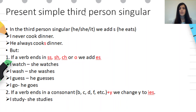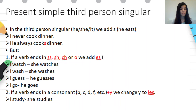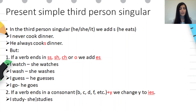Present simple — third person singular. When we use present simple, we should pay extra attention to the third person singular — he, she, it — because we add -s to the verb. For example: 'He eats.' Another example: 'I never cook dinner and he always cooks dinner.' But if a verb ends in -ss, -sh, -ch, or -o, we add -es. For example: I watch → she watches. I wash → she washes. I guess → he guesses. I go → he goes. If a verb ends in a consonant — for example b, c, d, f, etc. — plus -y, we change -y to -ies. For example: I study → she studies.